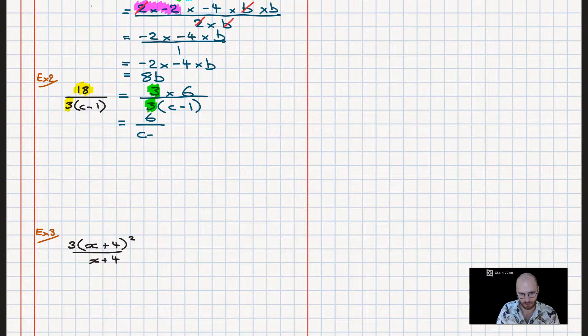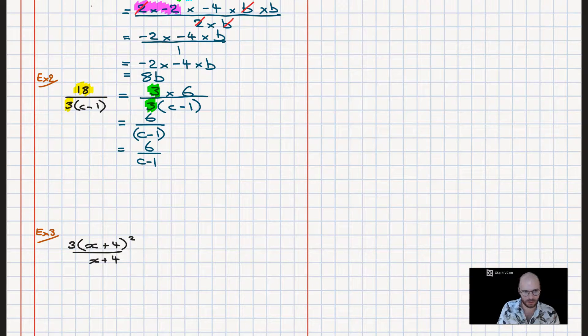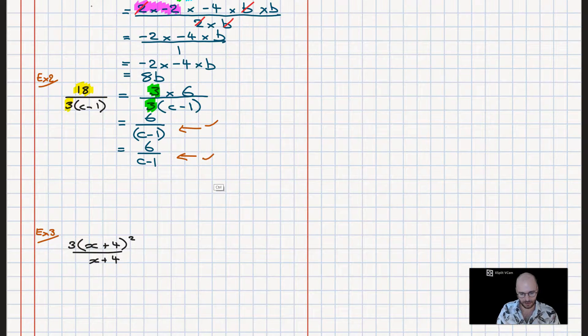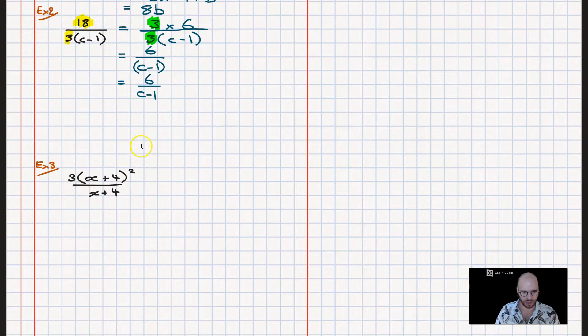Because it's all contained, we can rewrite it as 6 over c minus 1. This line here and this line here, they're both correct. It doesn't matter how you write it. This way is just a little bit more concise because there's no brackets. So that's example 2 done, nice and easy.